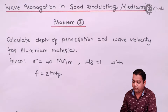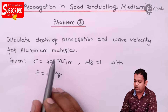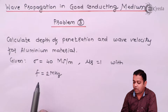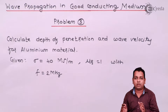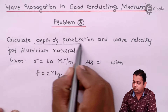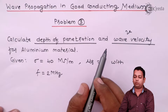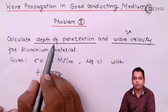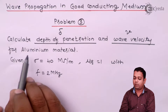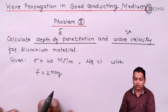Here we see the problem statement: calculate the depth of penetration and wave velocity for aluminium material, given sigma equals 40 mega siemens per meter, mu_r equals 1, and frequency f equals 2 megahertz. The problem statement is very simple and short. We have to calculate two parameters: depth of penetration and wave velocity. Velocity is represented by small v, and depth of penetration is denoted by the delta symbol. The conductivity, relative permeability, and frequency values are given.